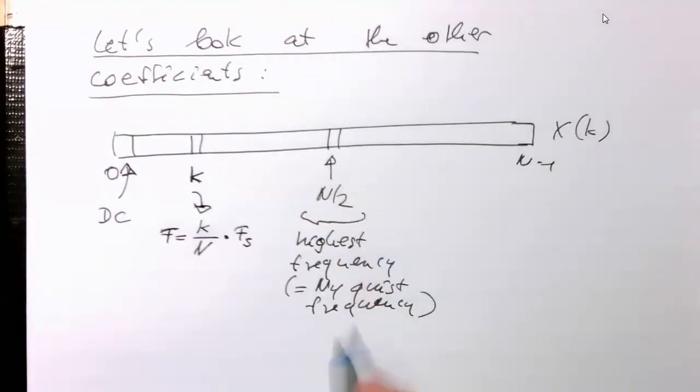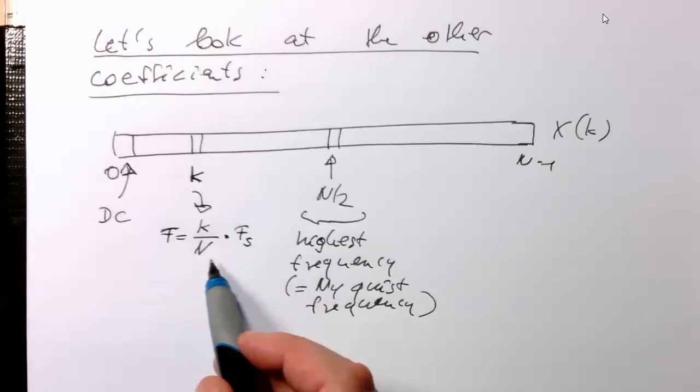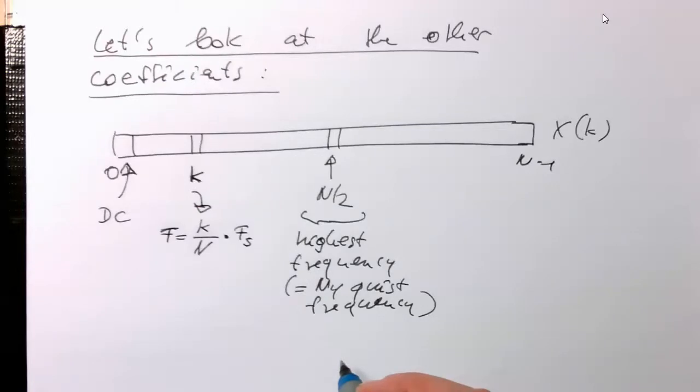And then here in the middle at n half. If k is n half, then obviously this would be just the Nyquist frequency here in the middle.